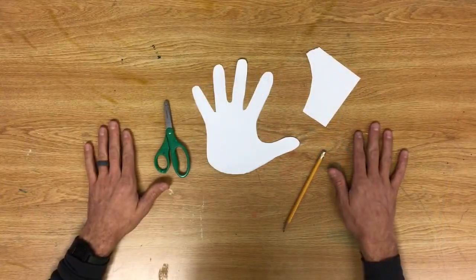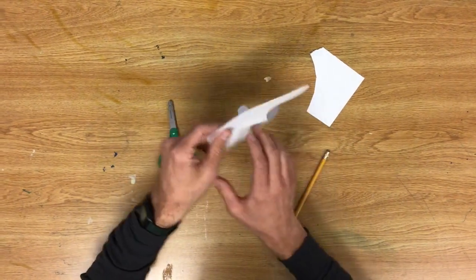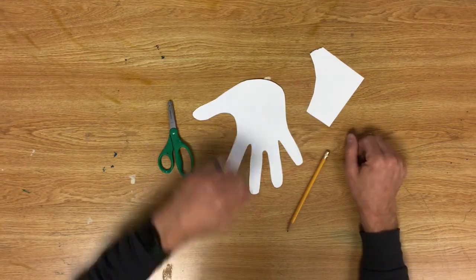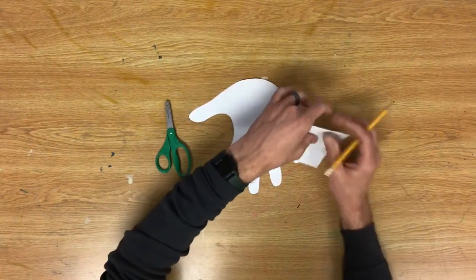All right, now that I have my hand traced and cut out I'm going to use this to make my polar bear. I'm going to take my hand and flip it like this. This is going to be his neck and head and these will be his legs.